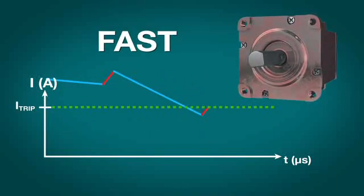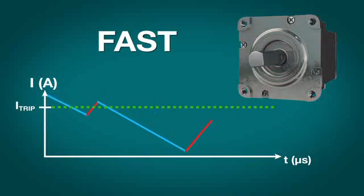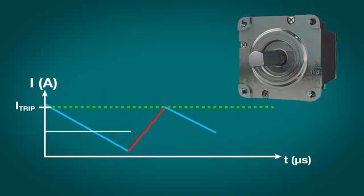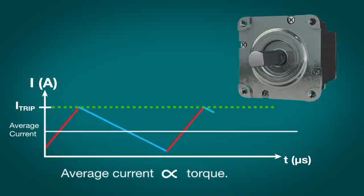On the other hand, fast decay, which dissipates current from the motor very quickly, will keep current regulated but causes a large ripple. This reduces the average motor current and torque significantly and forces the system to work harder to achieve the desired current level and torque.